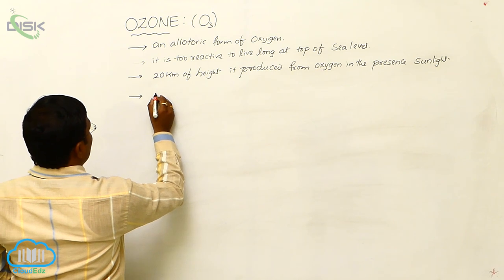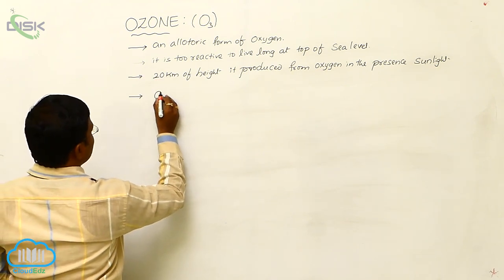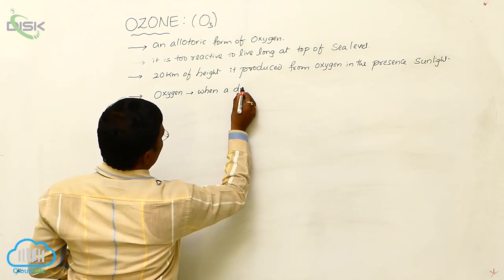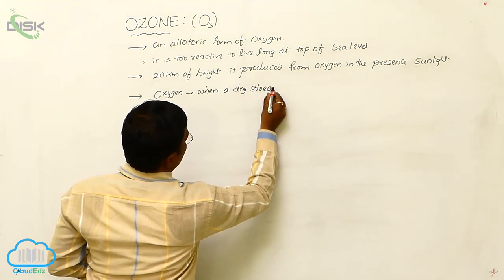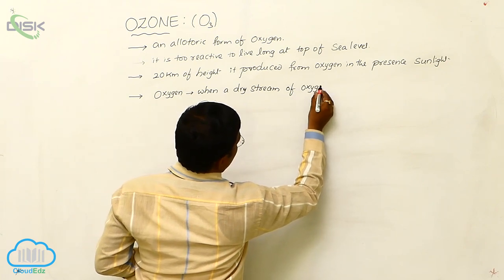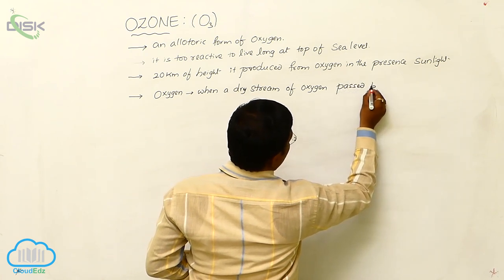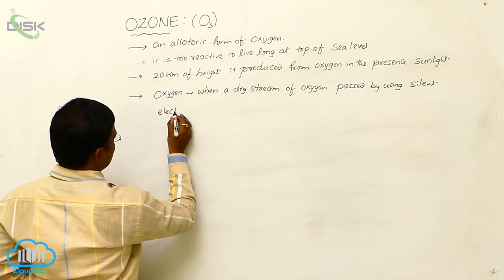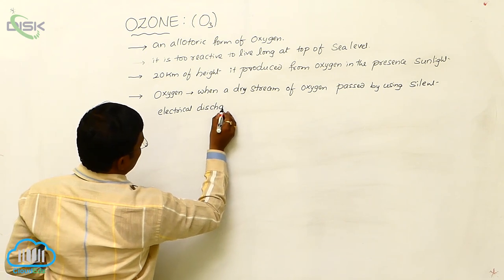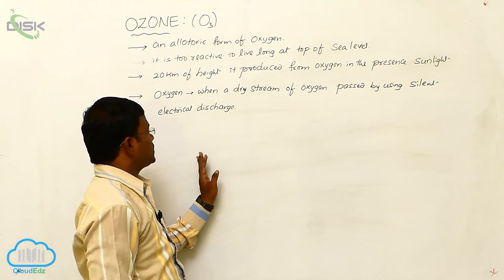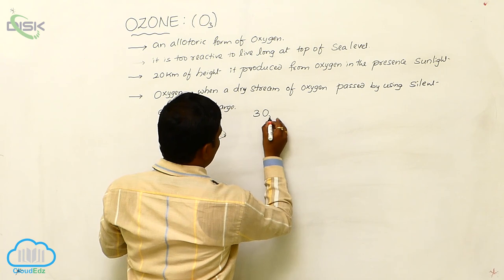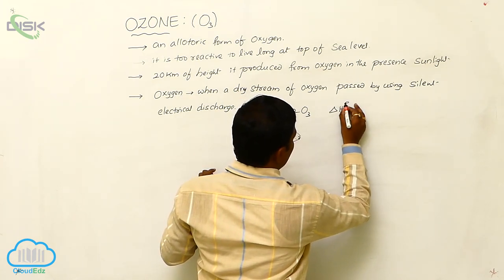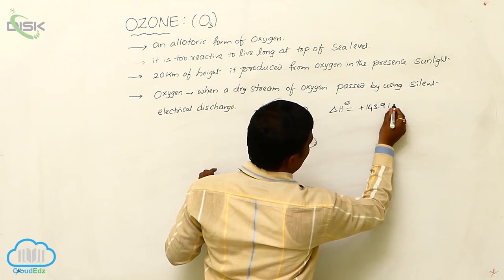In the laboratory, ozone is produced from oxygen when a dry stream of oxygen is passed through a silent electric discharge tube. Oxygen converts into ozone: 3O2 gives rise to 2O3. During this process, energy is released as +143.9 kilojoules per mole.